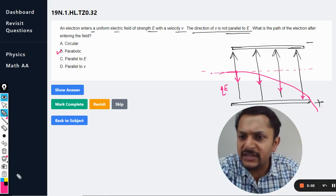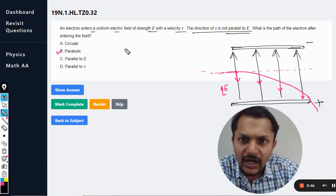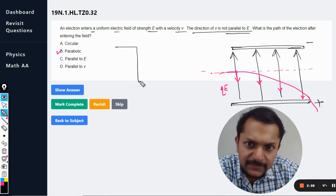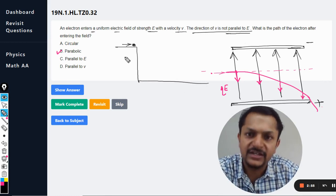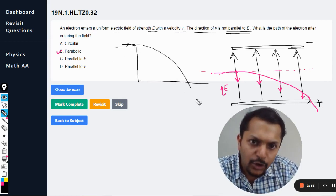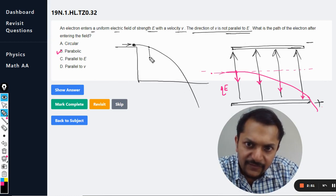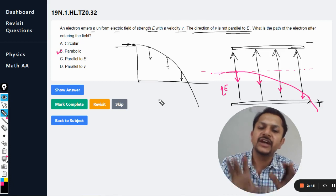You can compare this with mechanics, where there is a ball here and we just kick it. It would be acted upon by gravity at every point. At every point, it is experiencing a downward force, and the force is not changing its direction.